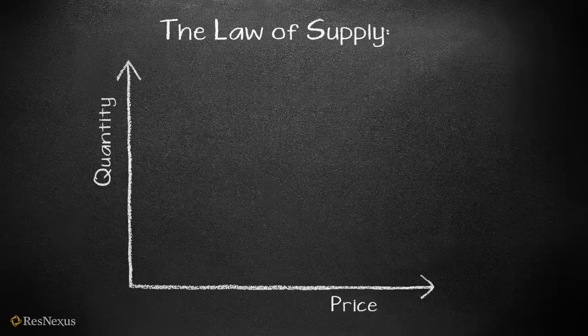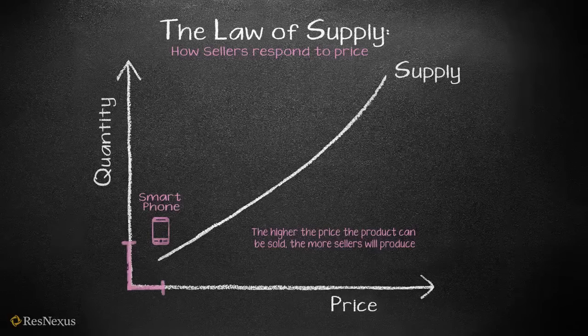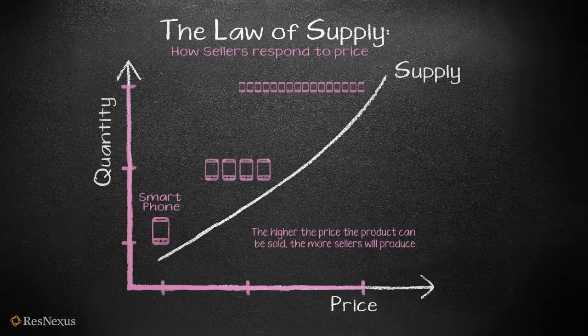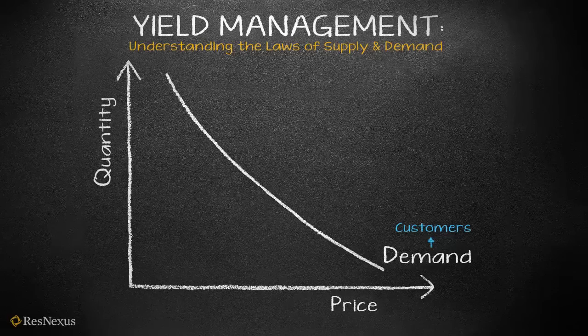Now let's talk about the Law of Supply. This law shows how sellers respond to price. Supply increases as price increases. When an item sells at a low price, sellers aren't motivated to sell a lot of those items, so quantities stay low. If the price of an item is high and people are in the mode of buying that item, sellers want to supply it to earn more money, so they produce higher quantities. A great example of this is smartphones. During their initial production, quantities were limited because sellers didn't know how the market would respond to the price. Quantities quickly increased once sellers realized the market would support the higher prices.